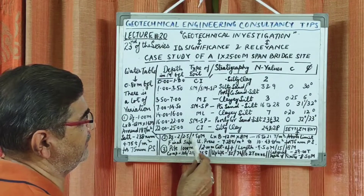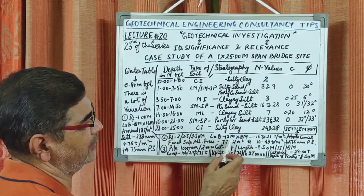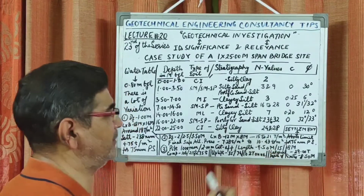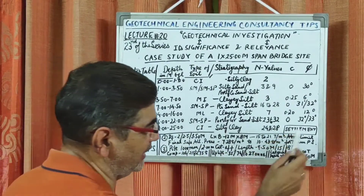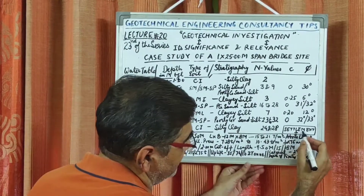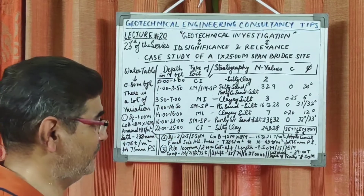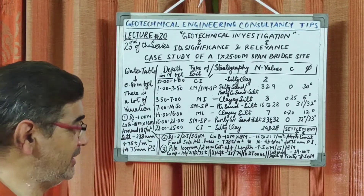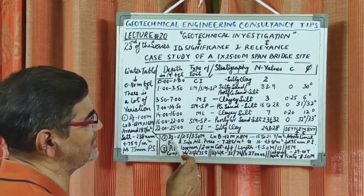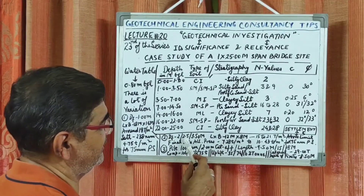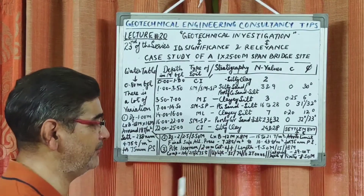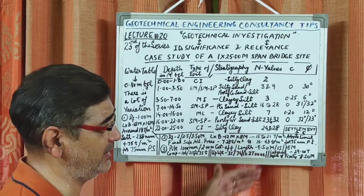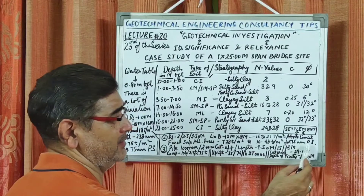We then decided to do further calculations at depths of 2, 2.5 and 3.5 meter for a foundation length by width of 12 meter by 8 meter. We got bearing capacity in the range of 15 to 21 ton per meter square, but for all three cases the settlement was found to be well above the safe permissible limit of 75 mm. As we all know, bearing capacity must be decided by settlement criteria. The final safe allowable pressure for these three different depths ranged from 7.3 ton to 10.4 ton per meter square, at which the settlement was found to be within the permissible settlement limit value of 75 mm.